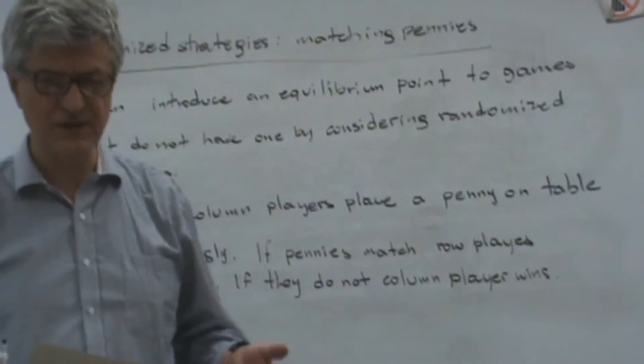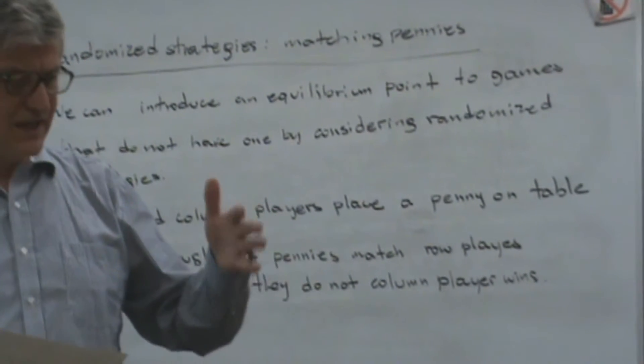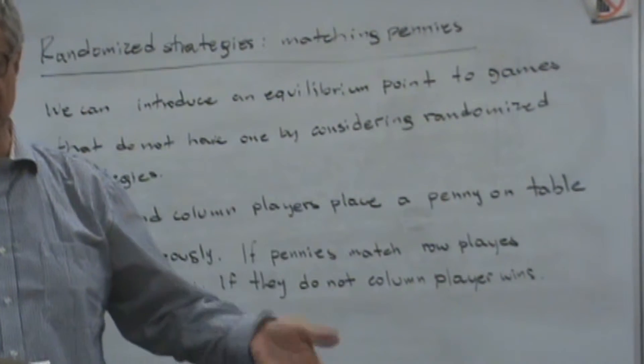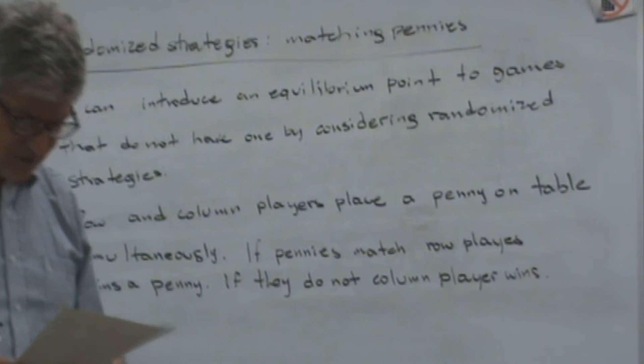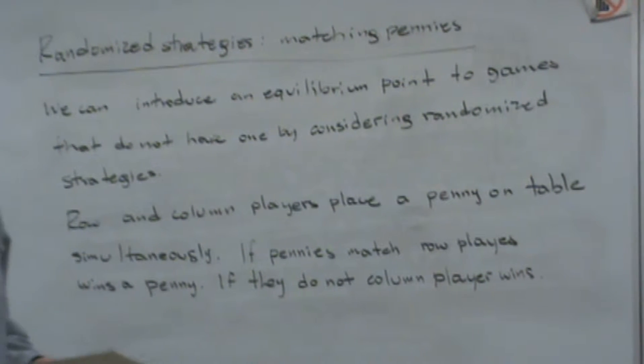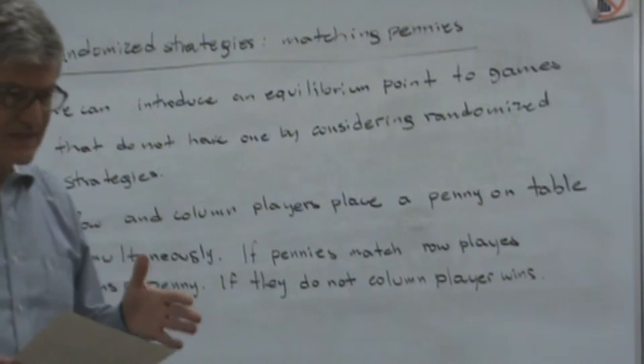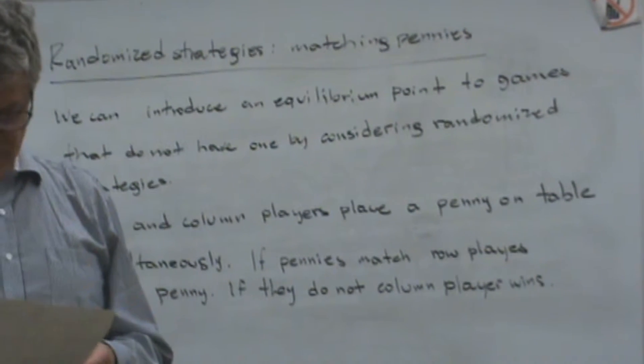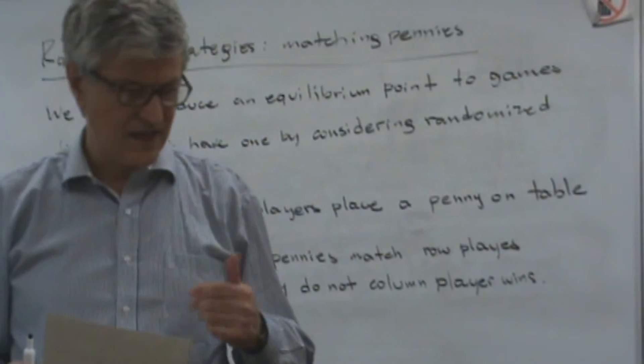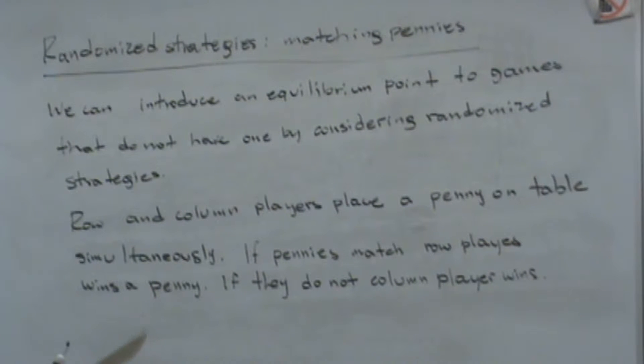So we flip a coin, if the coin is heads we select one option, otherwise we select the second option. If we do that, then the reward table increases and we have an equilibrium point.